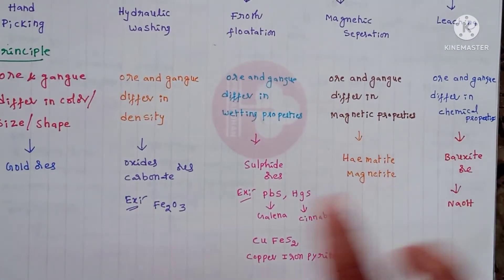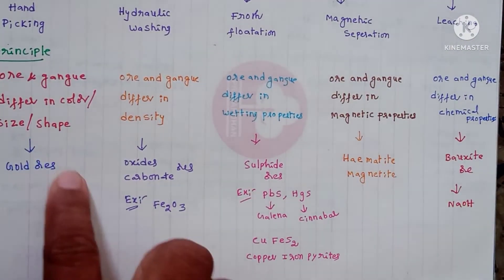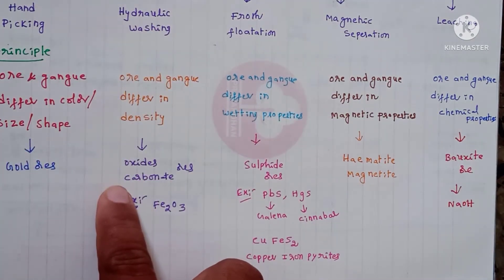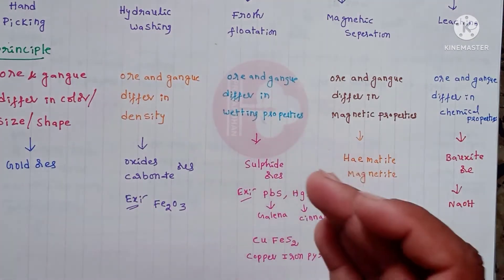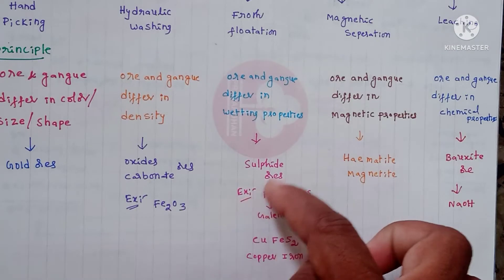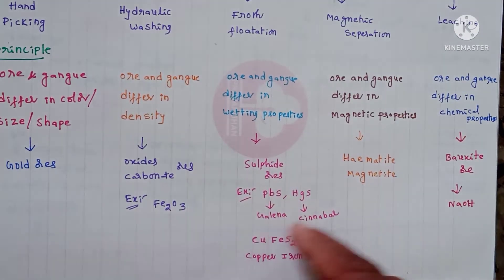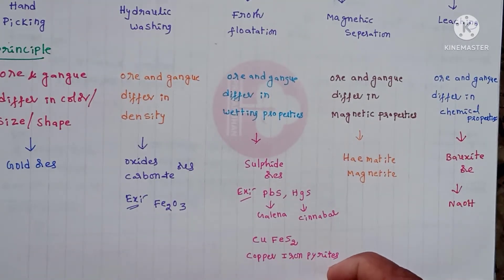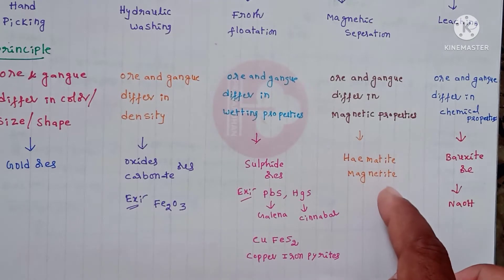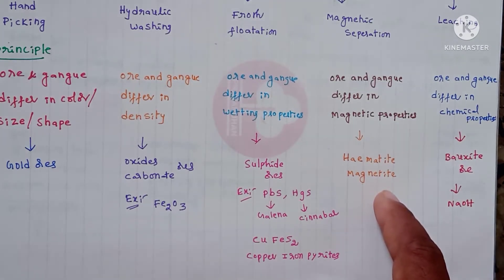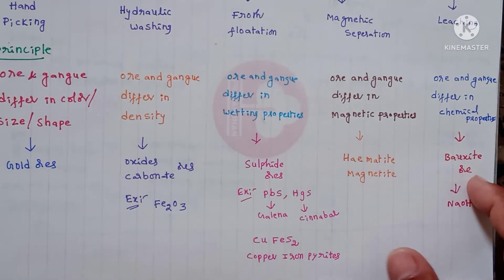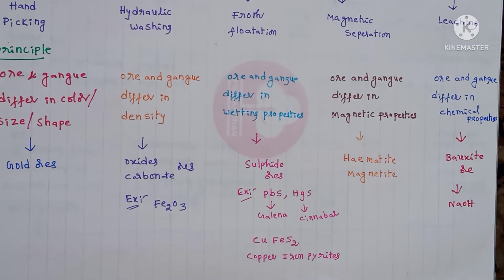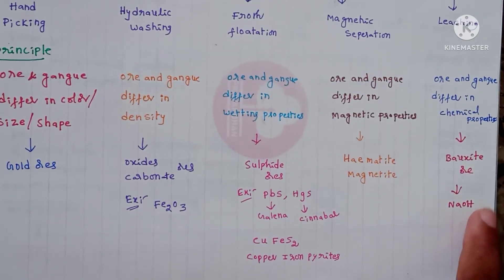If ore and gangue differ in magnetic properties, use magnetic separation. Hand picking is mainly used for gold ores. Hydraulic washing is mainly used for oxide or carbonate ores. Froth flotation is mainly used for sulphide ores — examples include PbS (galena), HgS (cinnabar), and copper-iron pyrites. Hematite and magnetite are mainly used with magnetic separation. Leaching is used for bauxite ore purification using sodium hydroxide as the chemical reagent.